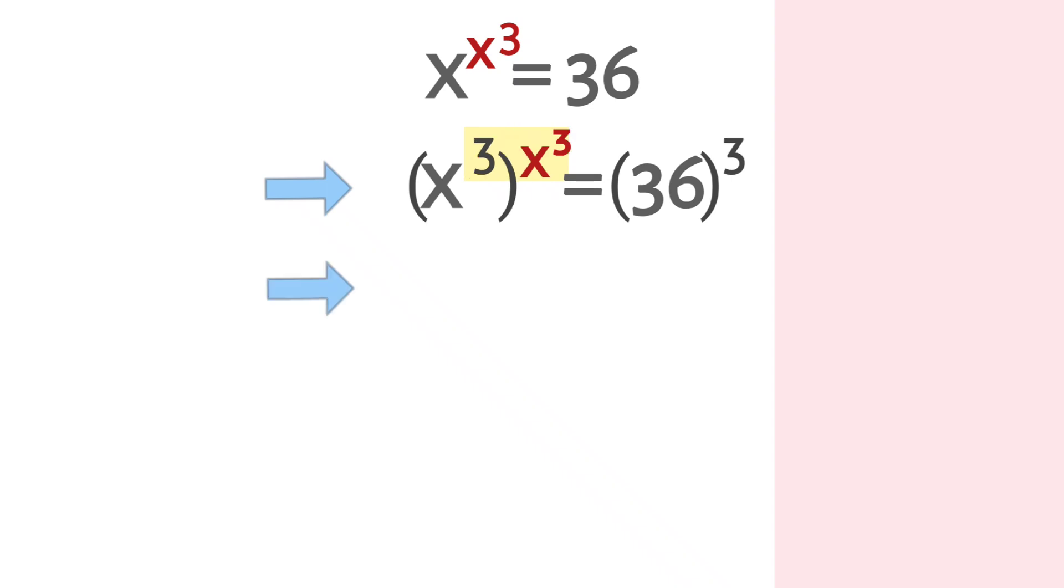Now 36 on the right-hand side can be written as 6 square. Multiplying the exponents of 6, we get 6 to the power 6 on the right-hand side.